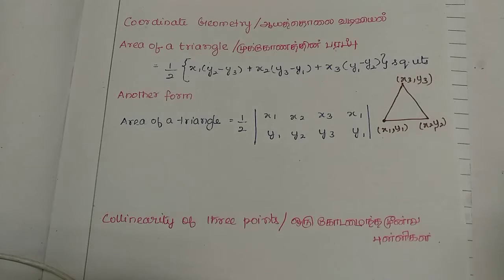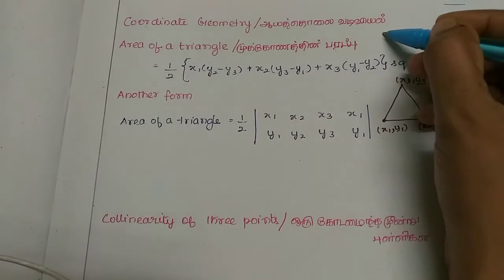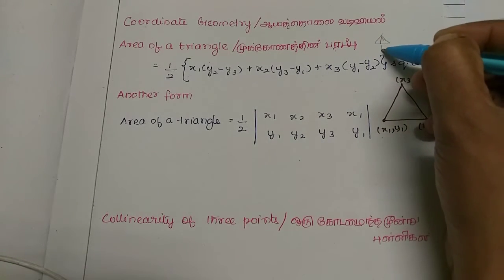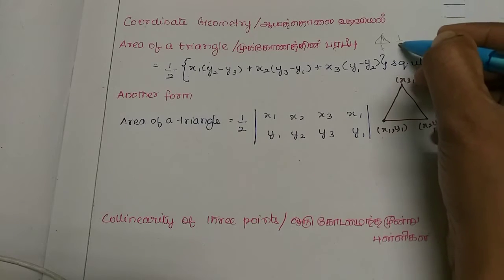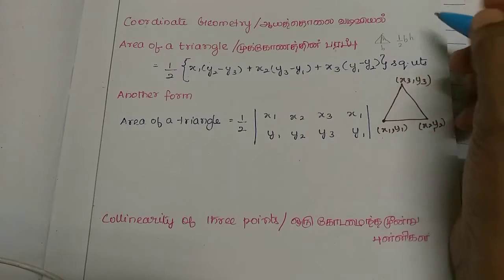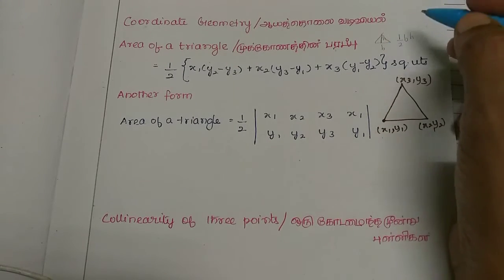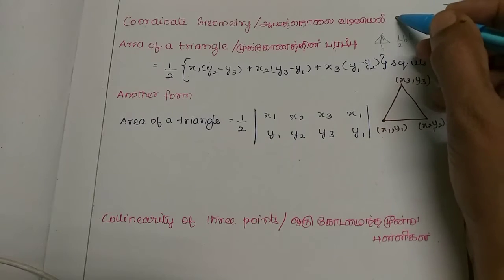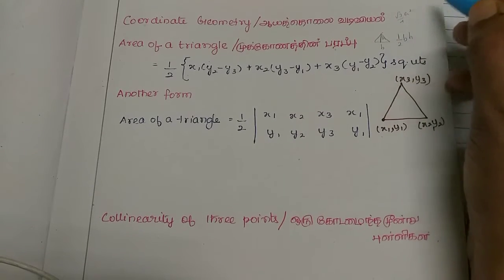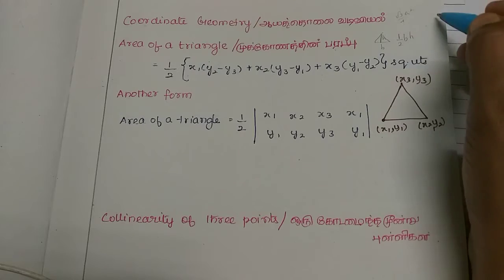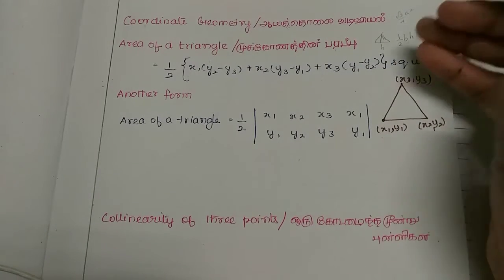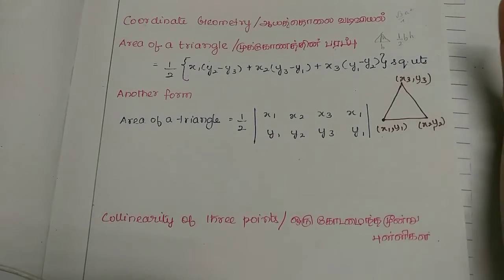Now we have a right angle triangle — there is a height and a base. The equilateral triangle formula is root 3 by 4a². We will use the area of the triangle formula: there is a base and a height.